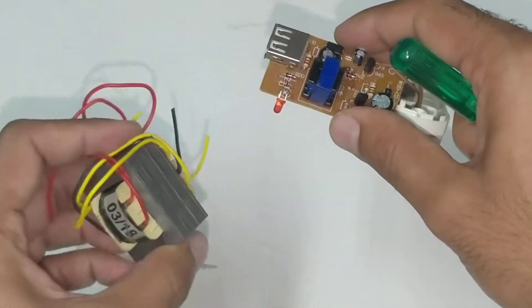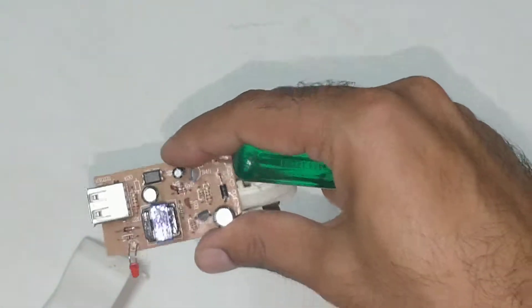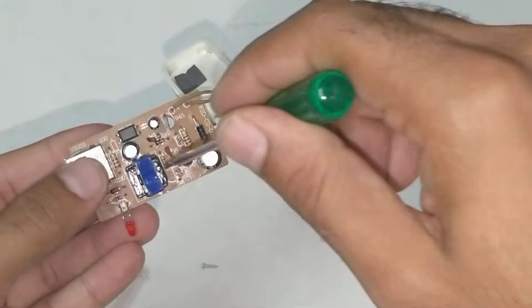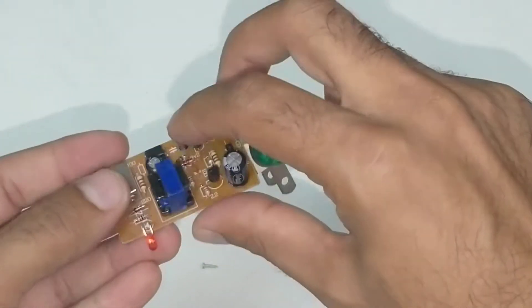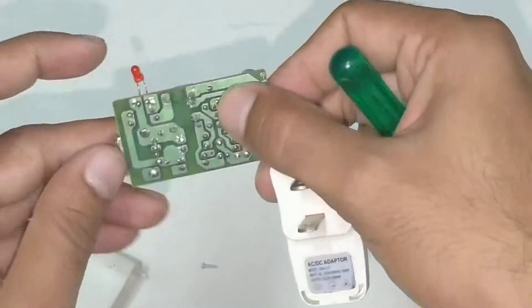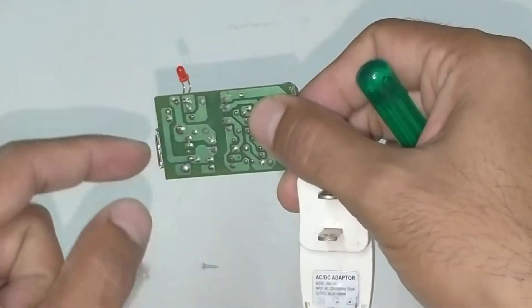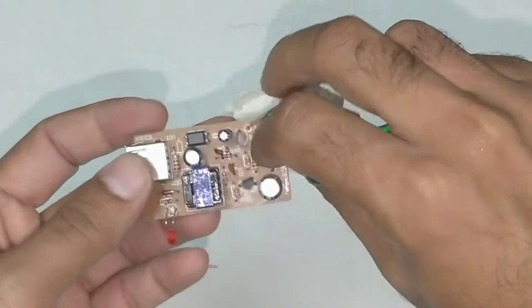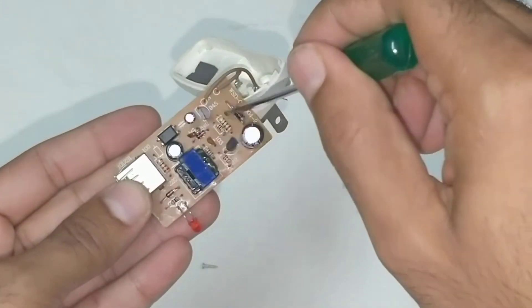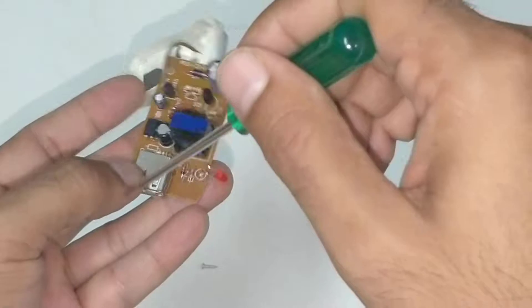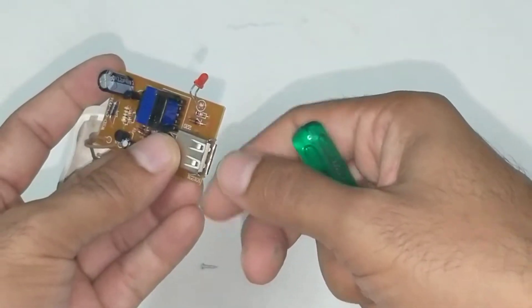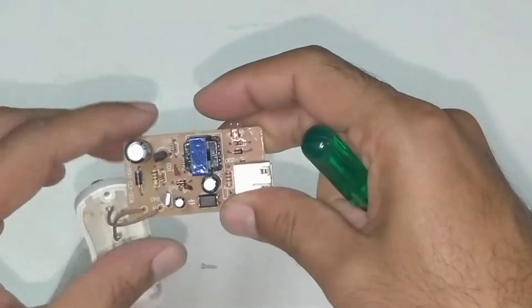But here we are switching at kilohertz, so that makes the transformer size very small. After that you rectify it again because you need DC again. So first rectification, then switching, then conversion, then rectification again - you get the final output. It's as simple as that.